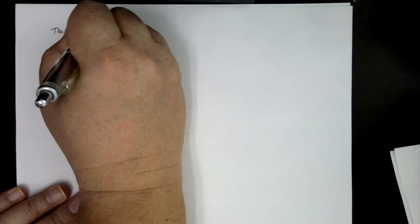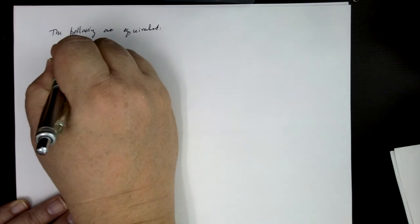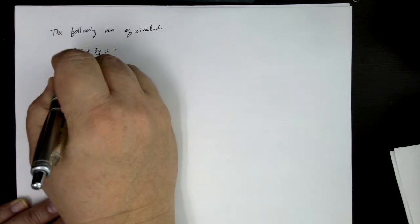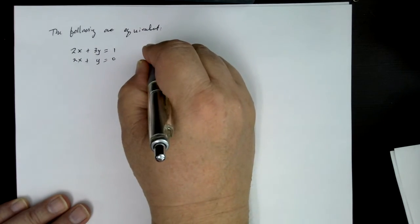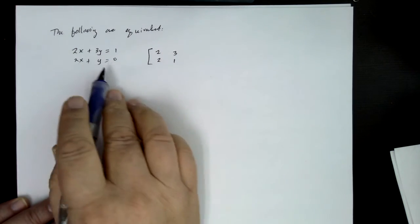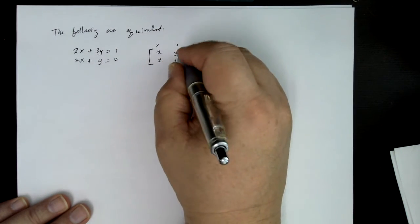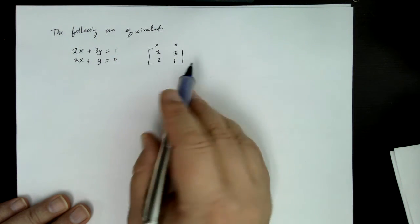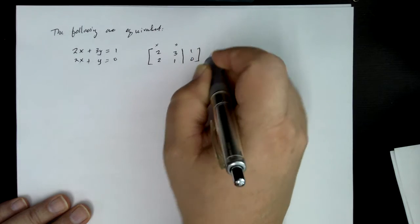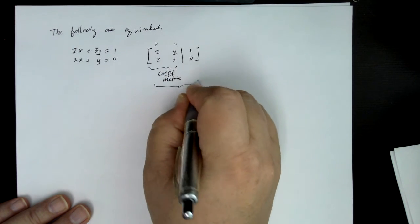So the following are equivalent. If we have something like 2x plus 3y equals 1, and maybe 2x plus y equals 0, then the matrix notation would look like this, where you put the coefficients to the linear part here. This would be like the column corresponding to x and the column corresponding to y. And then I like to put a bar here to say that this is the cut off between the left-hand side and the right-hand side of your equations, and then I put a 1, 0 here. And so this is called a coefficient matrix, and the whole thing is called an augmented matrix.